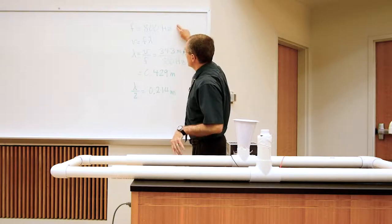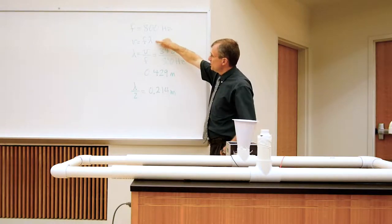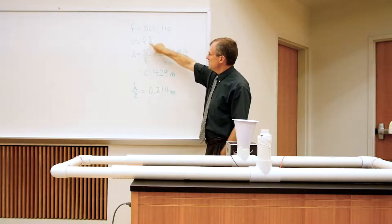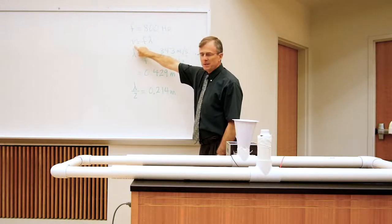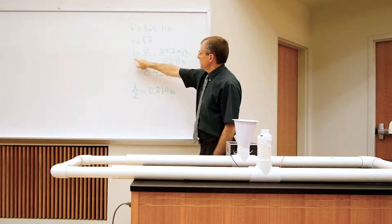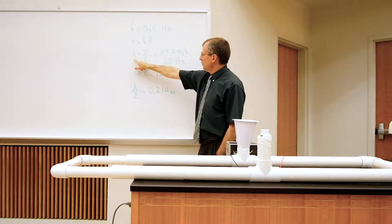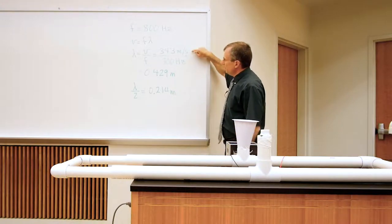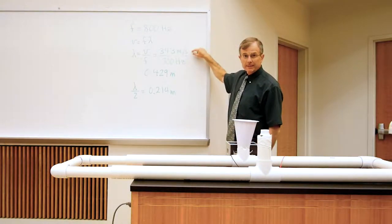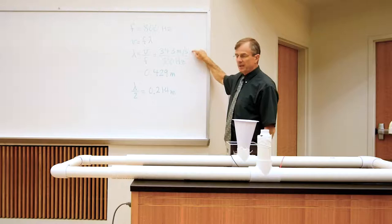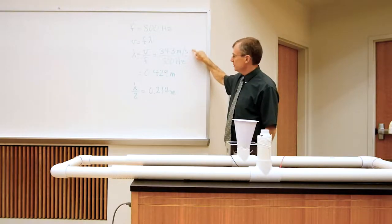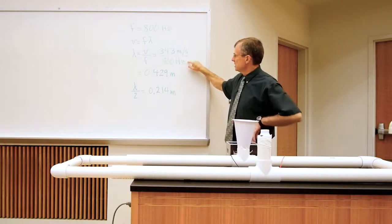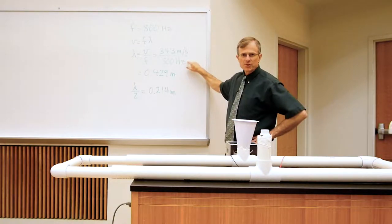The 800 Hz signal, if you use the formula V equals F lambda, the frequency times the wavelength is the speed of the sound. And solve that for lambda, the wavelength, that's V over F, that'll be 343 meters per second, the speed of sound in air approximately depending on temperature, but it's about 343, divided by the 800 Hz signal provided by the signal generator.